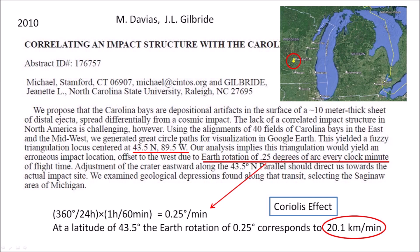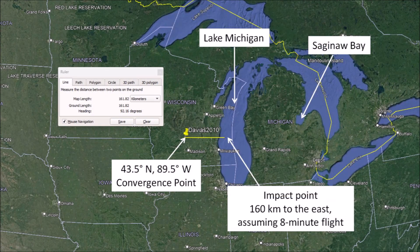We can use the data in the 2010 presentation by Davias and Gilbride to support an extraterrestrial impact in Lake Michigan. The paper reports the convergence of the Carolina Bays at latitude 43.5 degrees north and longitude 89.5 degrees west. The Coriolis effect, taking into consideration the rotation of the Earth at this latitude, corresponds to 20.1 kilometers per minute of flight time. The eastward rotation of the Earth would cause a perceived westward displacement of 160 kilometers of the origin of the ice boulders launched on an 8-minute flight. This places the site of the extraterrestrial impact and the origin of the ice projectiles exactly in Lake Michigan, which was covered with ice 12,900 years ago.